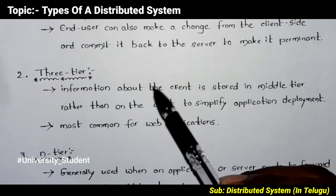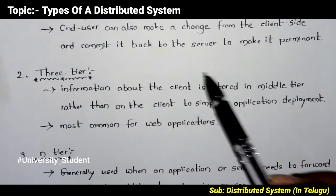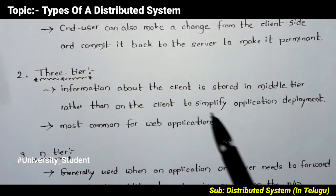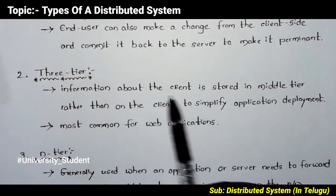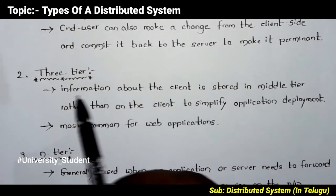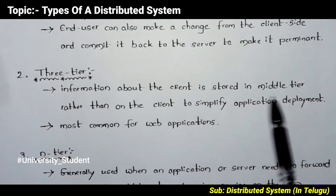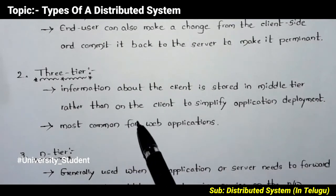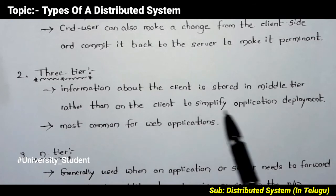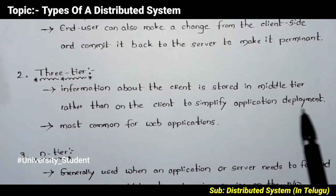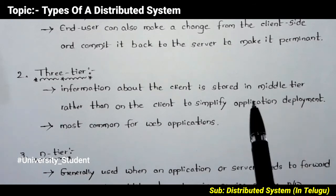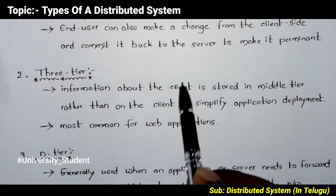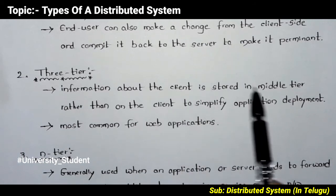The second architecture is 3-tier. Information about the client is stored in the middle-tier rather than on the client, to simplify application deployment.